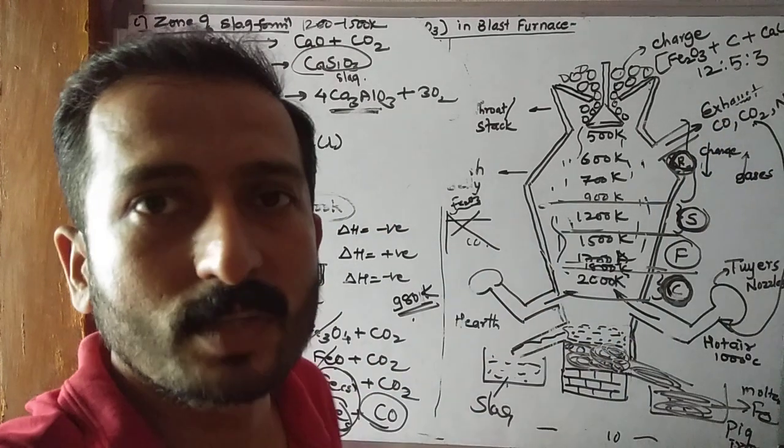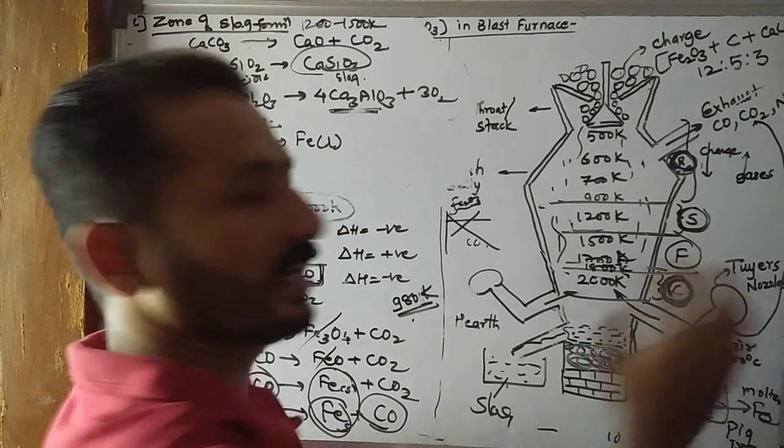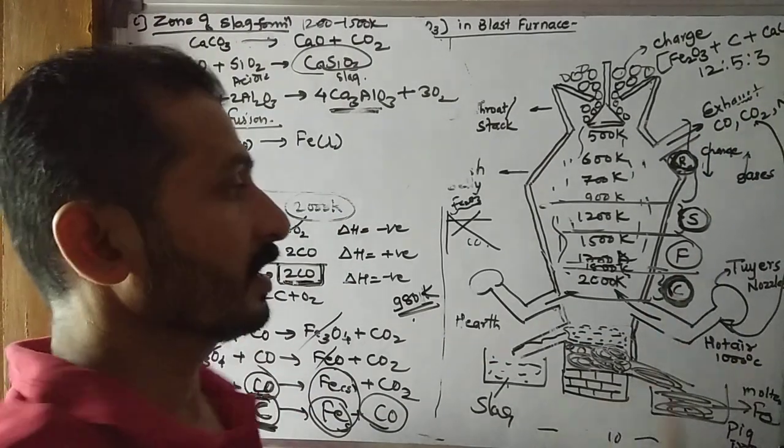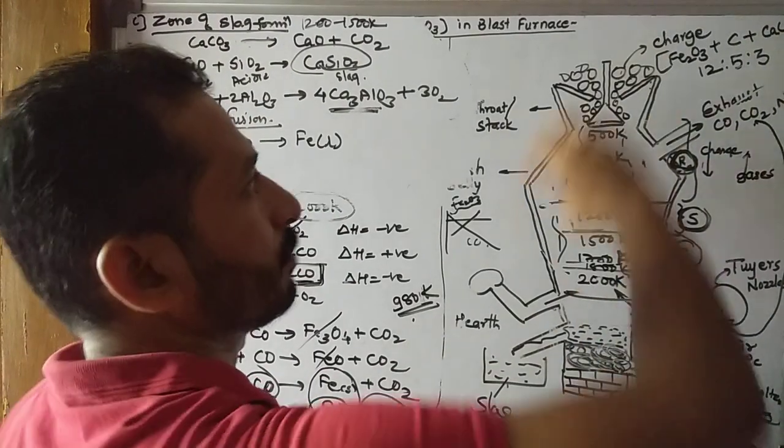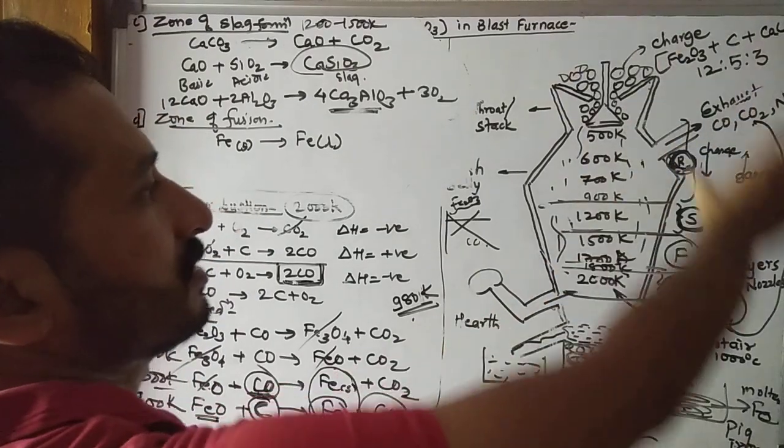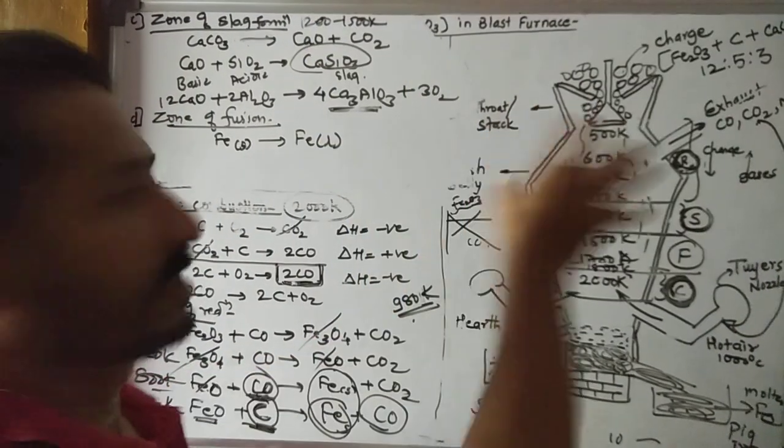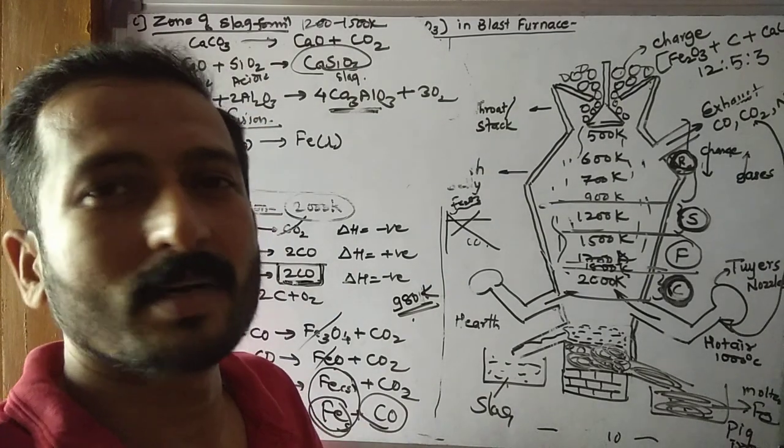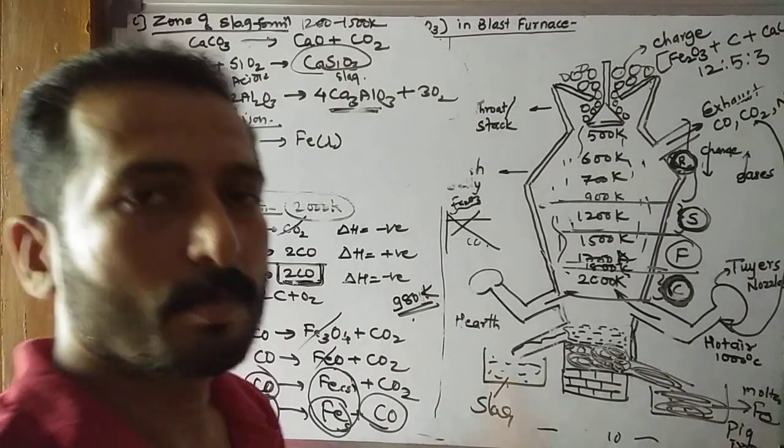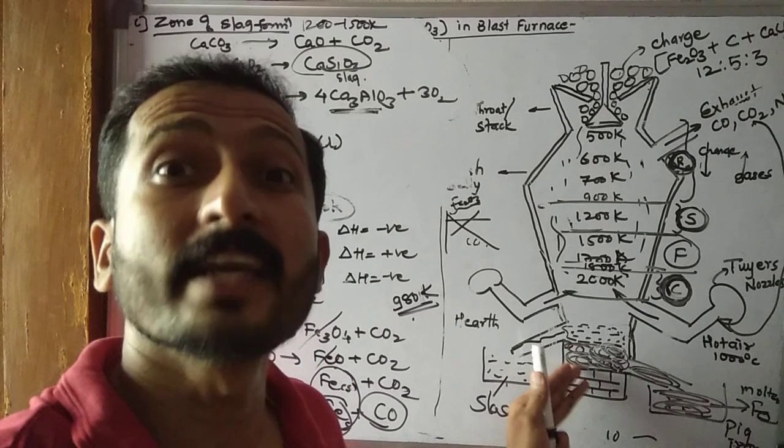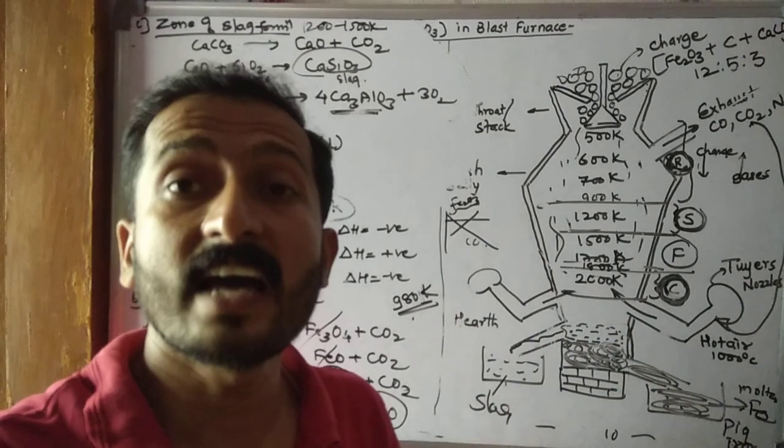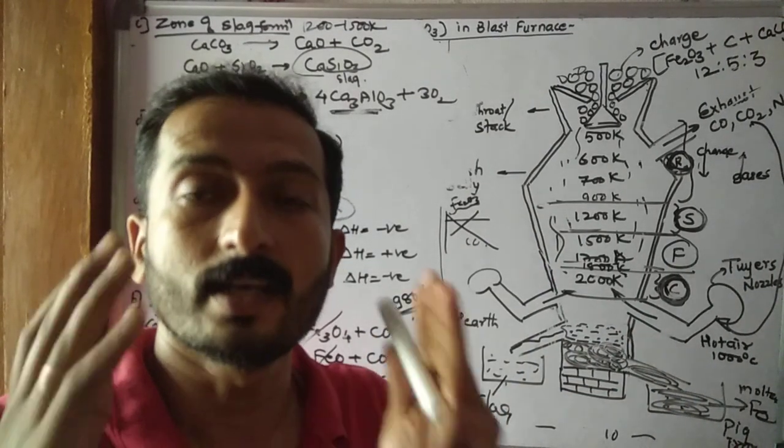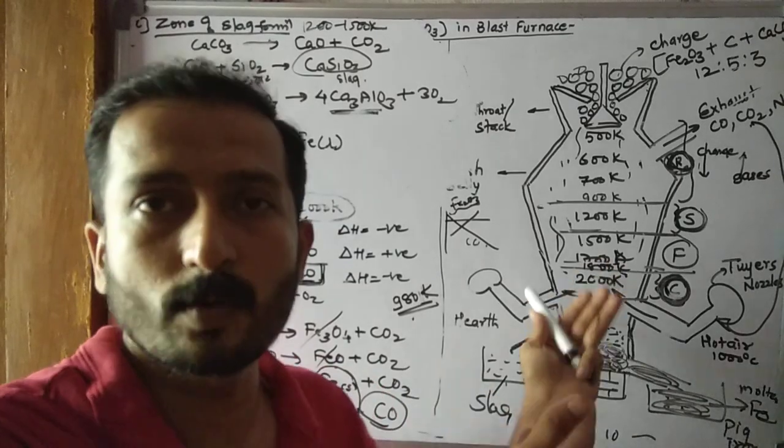So this is the functioning of the blast furnace. The steps are concentration, roasting, reduction, and then at last, refining. And refining, we have seen all the processes. Electrolytic refining is generally used to purify iron.